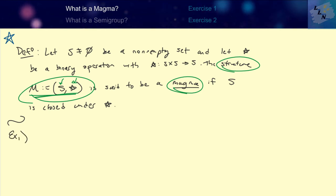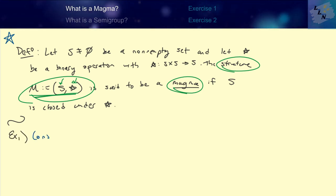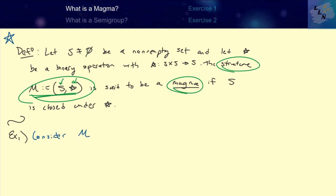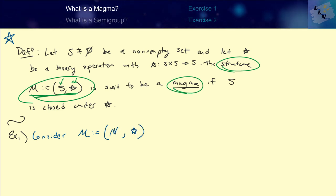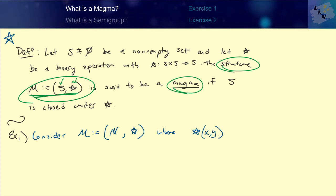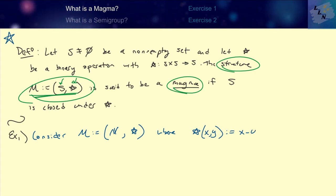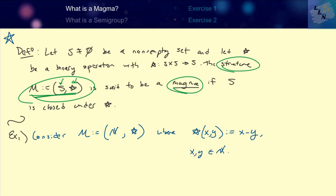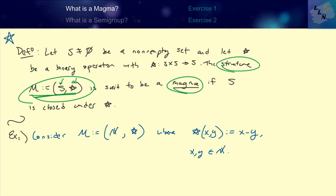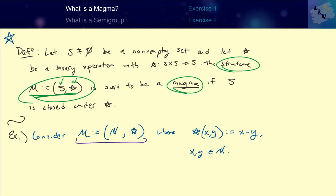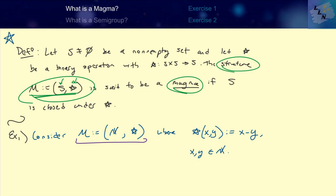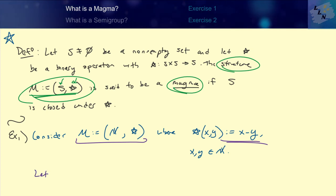Let's consider a couple of examples to get an idea of what's going on. We're going to consider the structure M defined to be the pair (N, star), where N is the set of natural numbers and the binary operation star on x, y — where x and y are elements of the natural numbers — is defined to be x minus y. If N is closed under star, then we say the structure M is a magma. So we need to figure out whether the natural numbers are closed under ordinary subtraction.